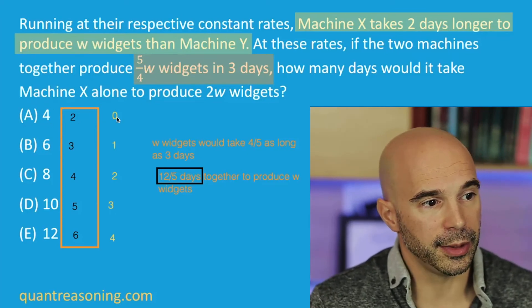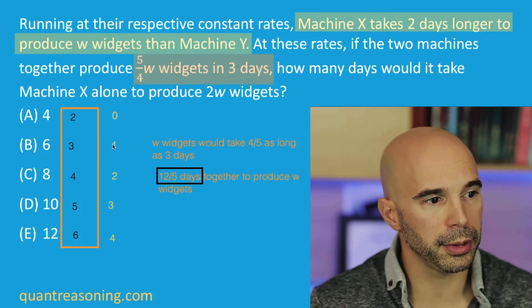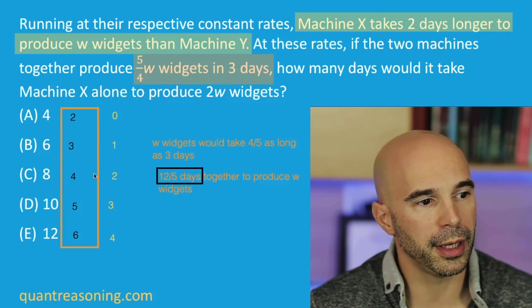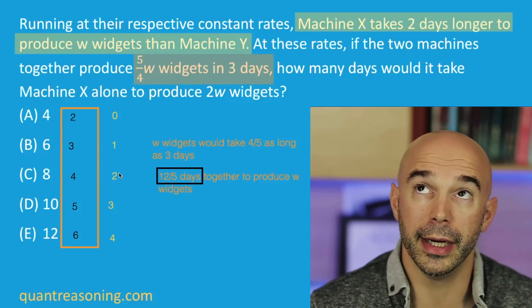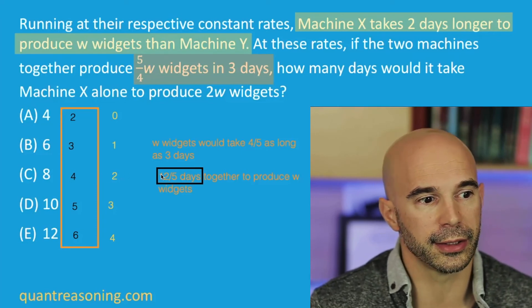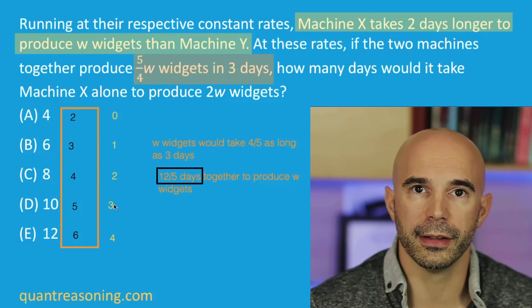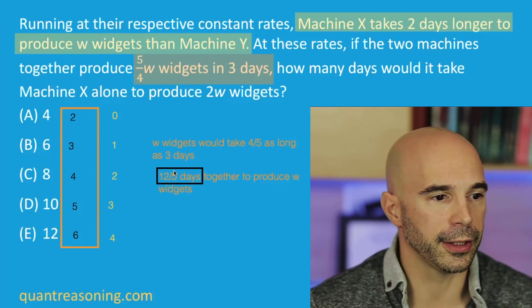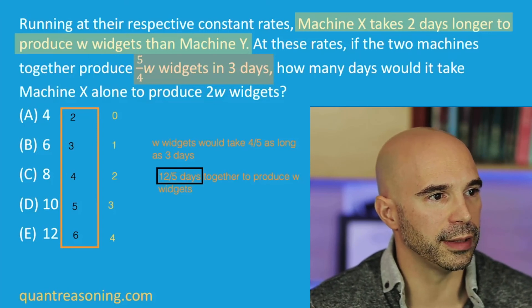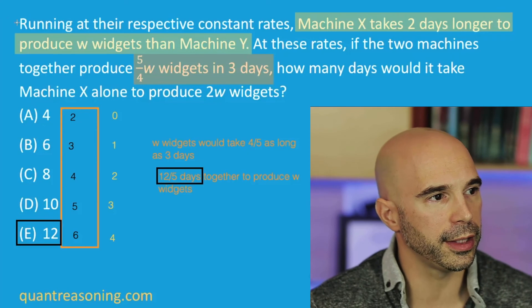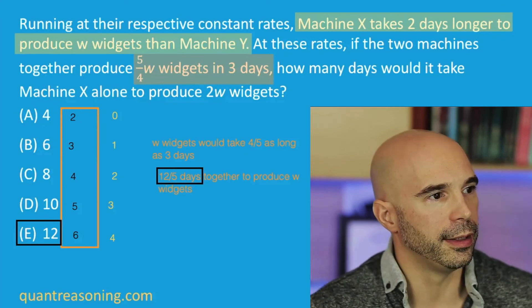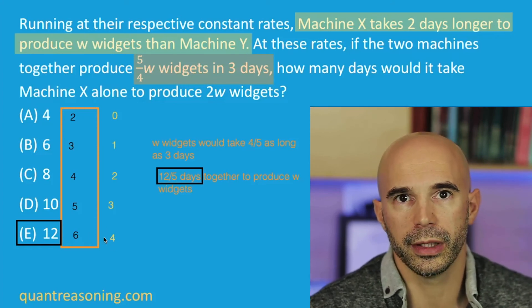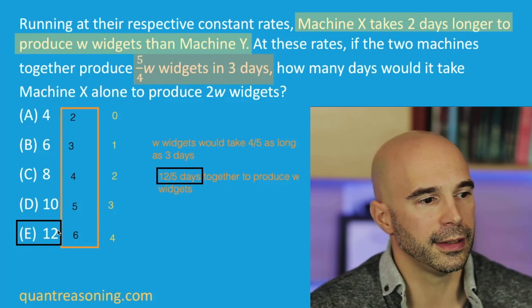A is nonsensical — a machine can't do it in zero days. For B: three times one divided by their sum is three-quarters — not twelve-fifths. For C: four times two divided by six is eight-sixths, or four-thirds — also not twelve-fifths. For D: five times three divided by eight is fifteen-eighths — not twelve-fifths either. So I don't even have to test the last answer choice — I'm ready to pick it and move on. And just for fun: six times four is 24, divided by their sum of ten, gives 24 over 10, which reduces to twelve-fifths. That's our answer.